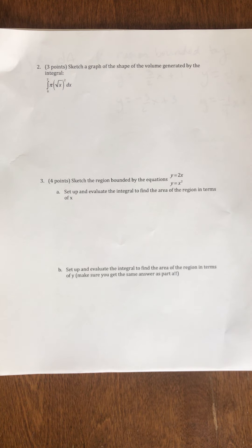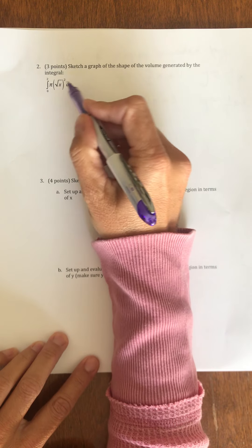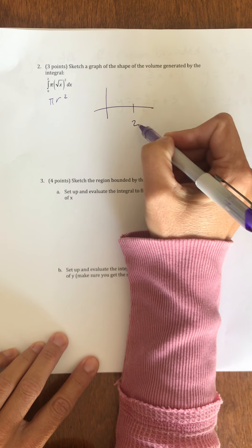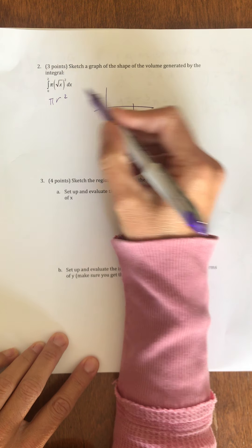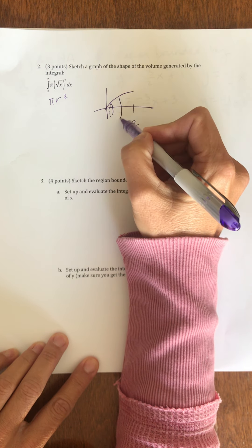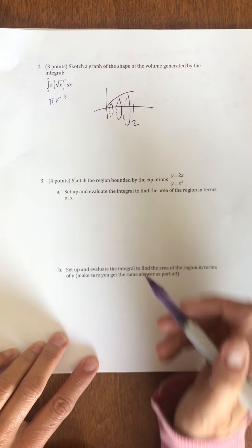Moving on to the second page. To sketch the shape of the volume, well, this is pi r squared from 0 to 2. So, my x-values go from 0 to 2. My radius is rad x, so it's going to look like this. It's going to look like half of a football, chopped in half this way.